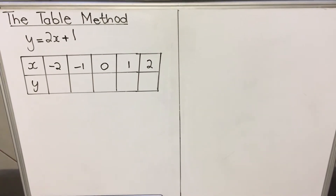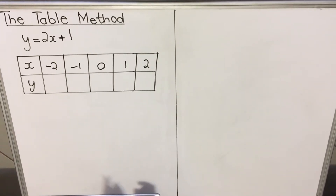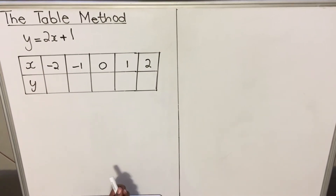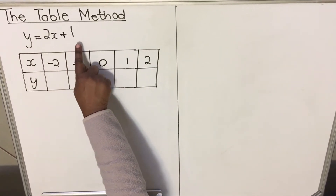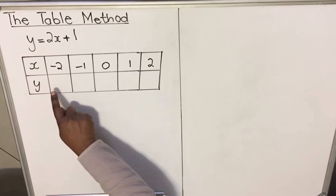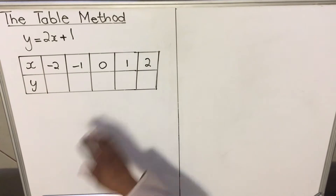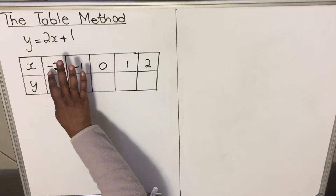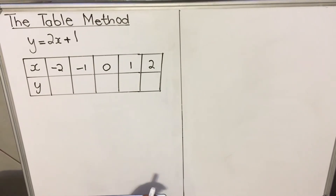This is a lesson on how to draw a linear function. A linear function is a straight line. One of the methods is called the table method, named after the table you use to draw the graph. You'll be given an equation — y equals 2x plus 1 — and you have your x values, which are your input values, and your y values, which are your output values. You can choose any input values; I chose 0, -1, -2, 1, and 2. Smaller values are easier to work with.